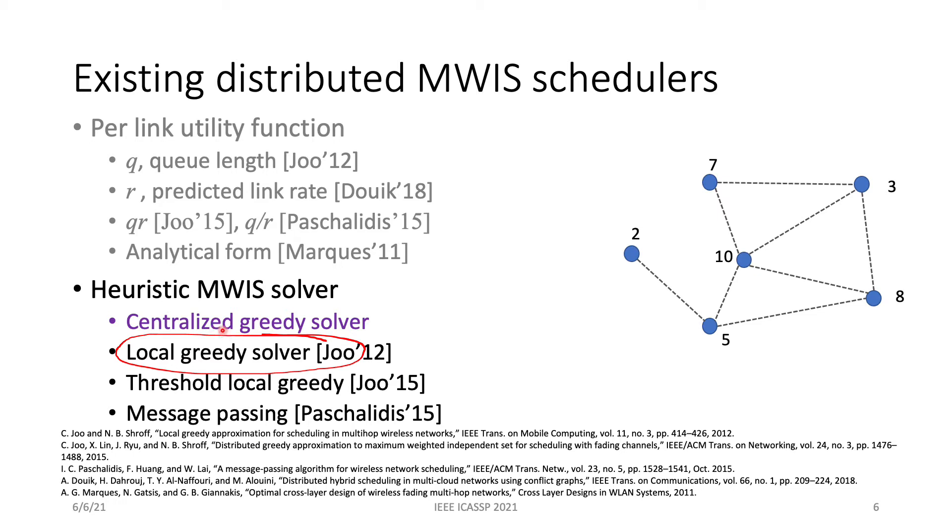Local greedy solver is a distributed implementation of the centralized greedy solver. Every node in the conflict graph will compare its utility with its neighbors. If it's bigger than all of its neighbors, such as this node, then it will be scheduled. The scheduled node then broadcasts a control message to its neighborhood so that all its neighbors will be excluded. That finishes the first iteration. And then the same operation will be repeated on the rest of the graph until all the nodes are either included in the schedule or excluded from the schedule.